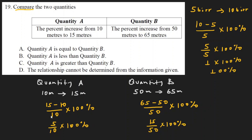So from 10 meters to 15 meters, quantity A gives us 50 percent. Now for quantity B: from 50 meters to 65 meters, the difference is 65 minus 50 equals 15. Divided by the original value 50, times 100 percent — that gives us 30 percent.